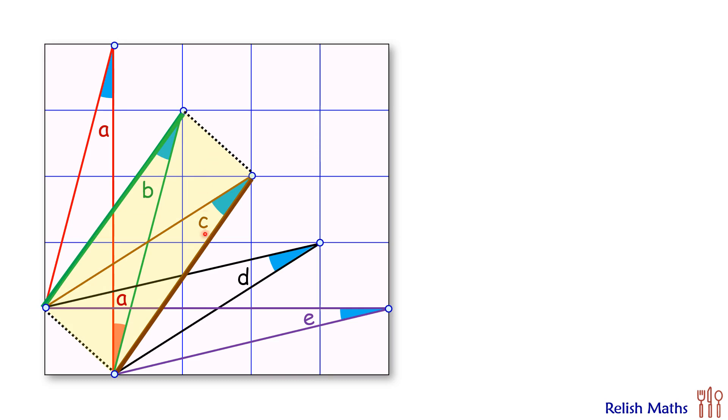So this yellow quadrilateral is again a parallelogram in which this line is acting as a transversal. So this angle here is equal to angle b.